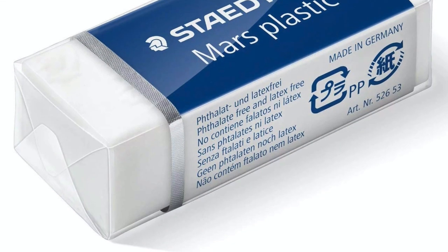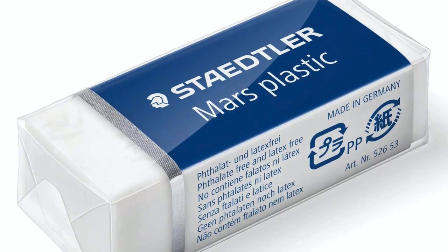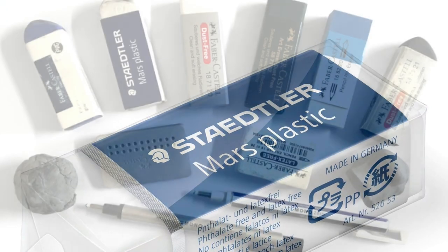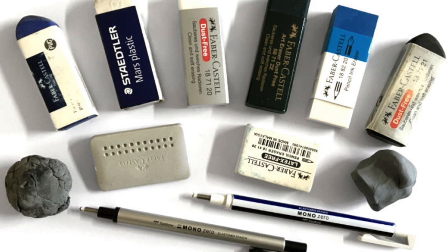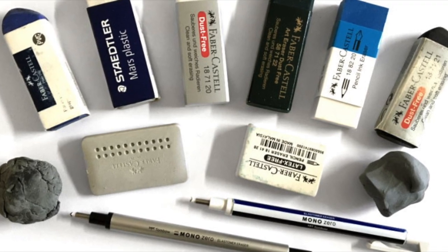These early erasers were typically made by mixing rubber with various additives and pigments to achieve desired properties such as flexibility, abrasiveness, and color.